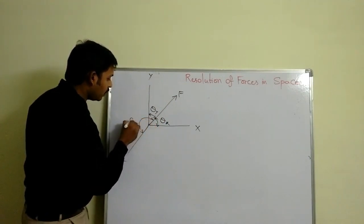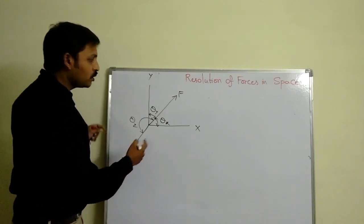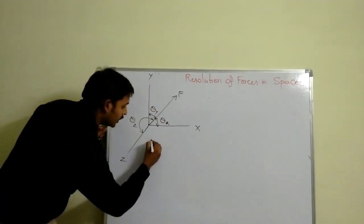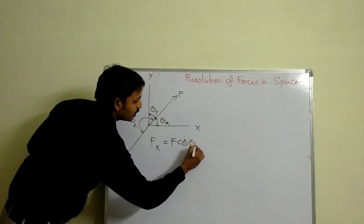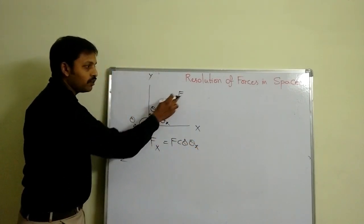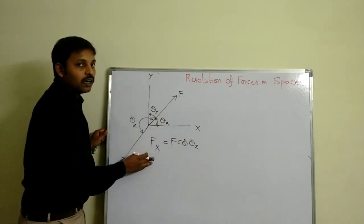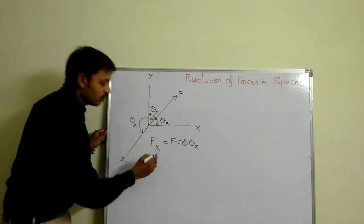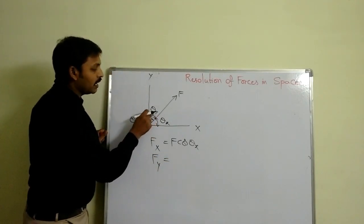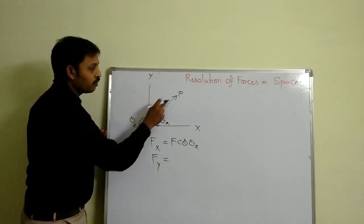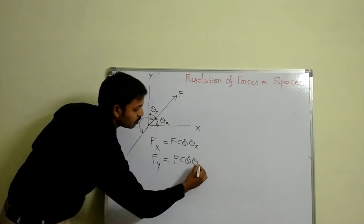Resolving this force into three components along x, y, and z directions: the force along x direction is F cos theta_x. So Fx = F cos theta_x, where Fx is the magnitude of force F along the x direction. The magnitude of force along the y direction, taking the reference angle as theta_y, is Fy = F cos theta_y.